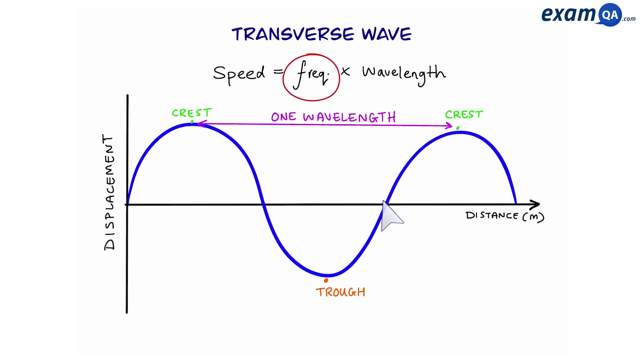Okay, now frequency is the number of waves per second, and this is measured in hertz. So if a wave has a 5 hertz frequency, that means 5 waves are passing a point every second. If it was 10 hertz, that means 10 waves are passing a point every second.